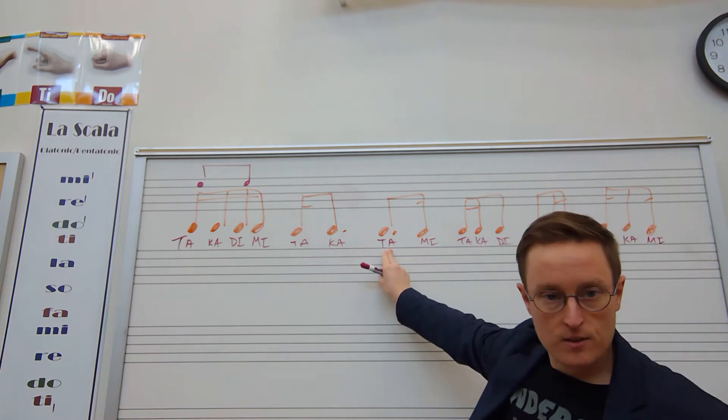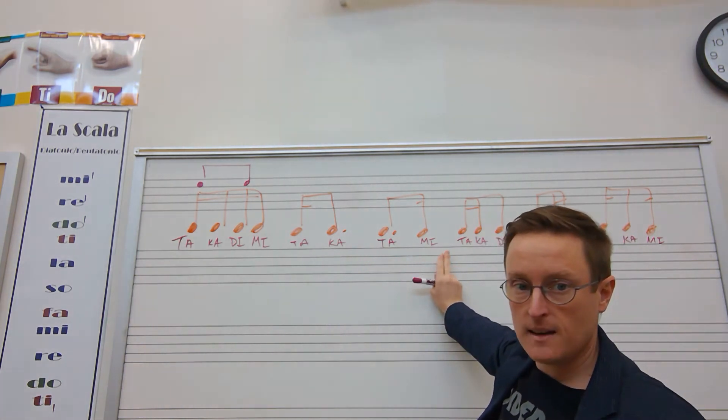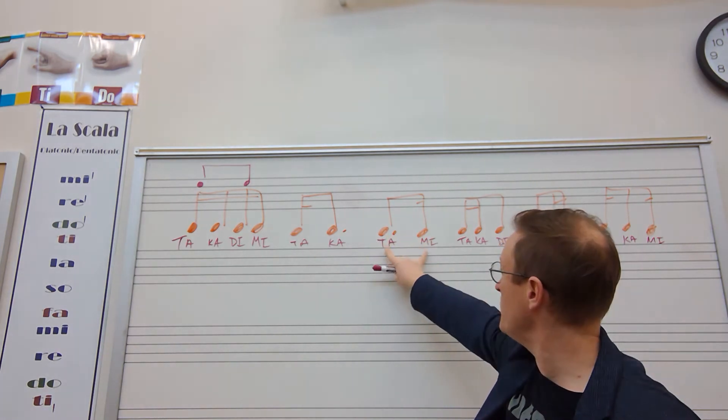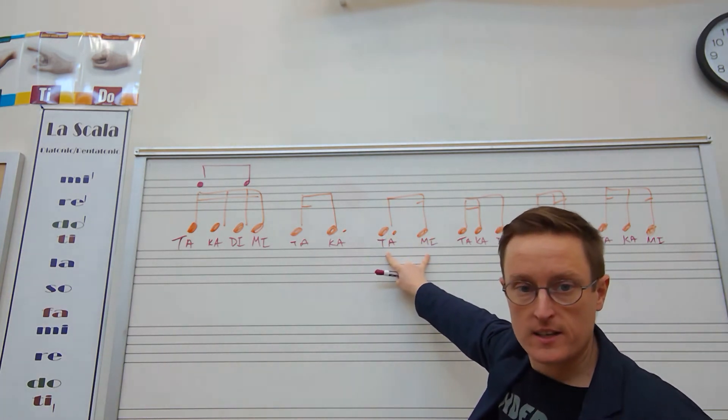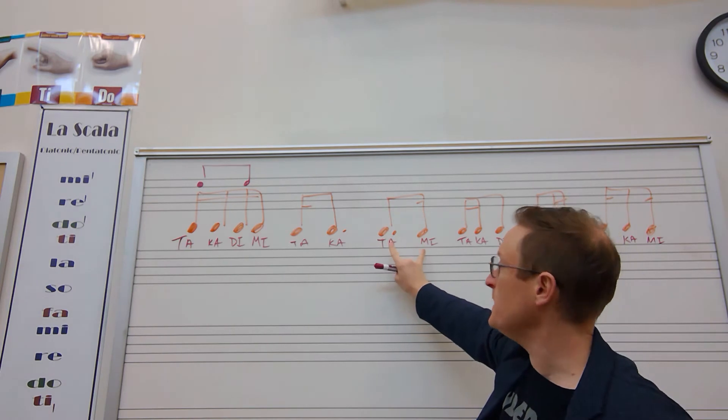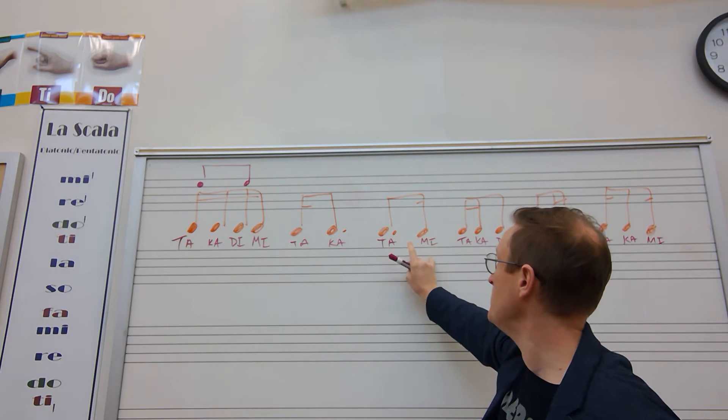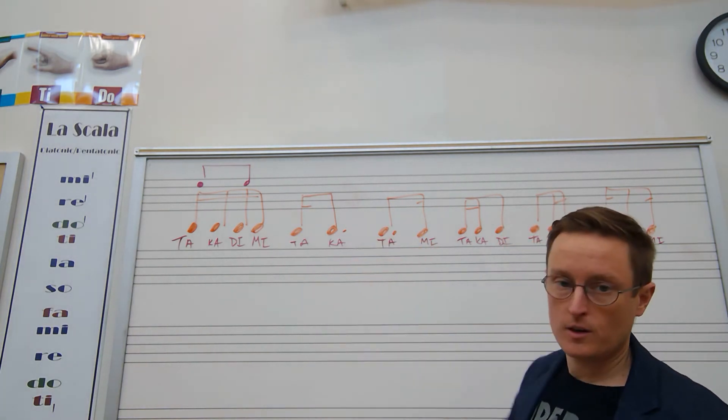This next one is a dotted eighth note first, so mi becomes the last sixteenth. That's worth three of them. That's worth one. That gives us our four. So that sounds like this. Ta-mi-ta-mi-ta-mi-ta. Go. Ta-mi-ta-mi-ta. Good for you.